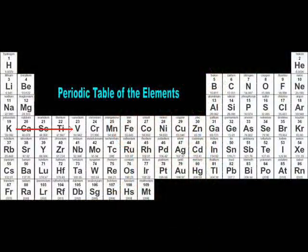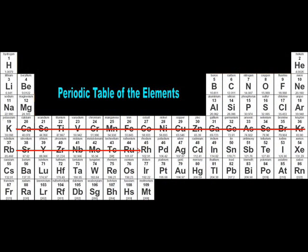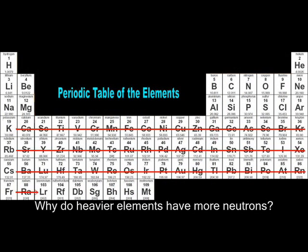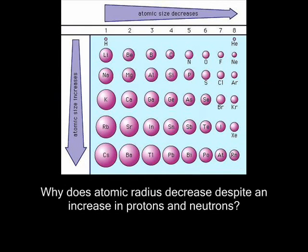Let's propose two theories under the rope hypothesis to address these questions. Keep in mind what we are trying to answer here. We are trying to answer two questions. Why do heavier elements in the periodic table have more neutrons? And why does atomic radius decrease from left to right, despite that the elements have more protons and neutrons?